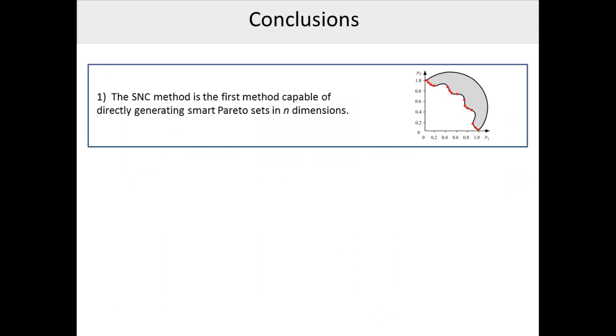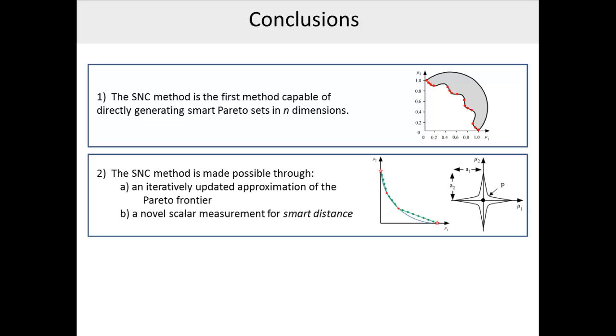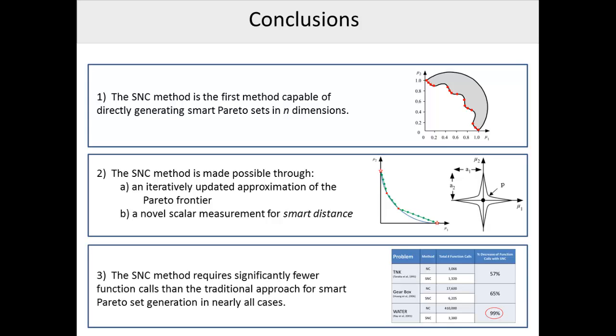To summarize what you've seen in this video, first, the SMART normal constraint method is the first algorithm capable of directly generating smart Pareto sets of solutions in n dimensions. Second, this method is enabled through the use of an iteratively updated approximation of the Pareto frontier and the creation of a novel scalar measurement for the SMART distance between points. And third, thanks to its ability to more intelligently search the design space, the SMART normal constraint method results in significantly fewer function calls than the traditional approach in nearly all cases, by as much as 99% in our example problems.